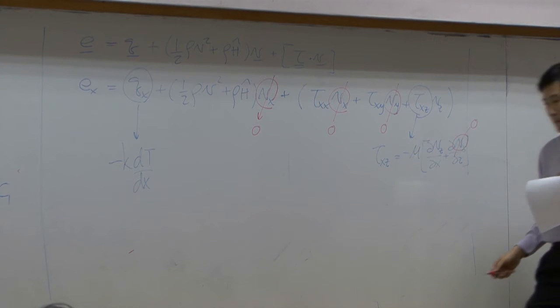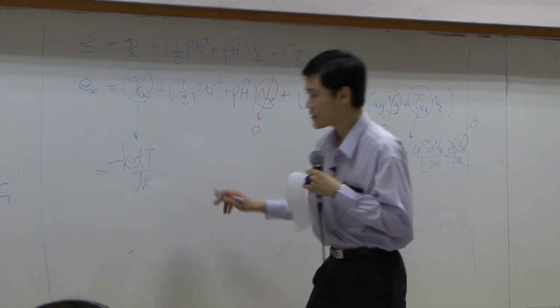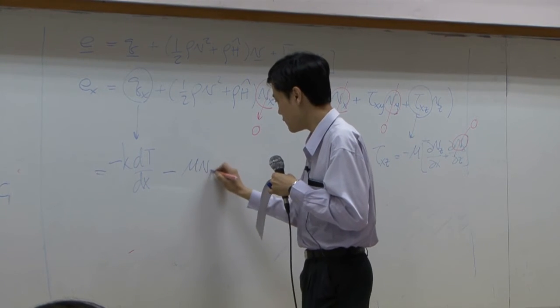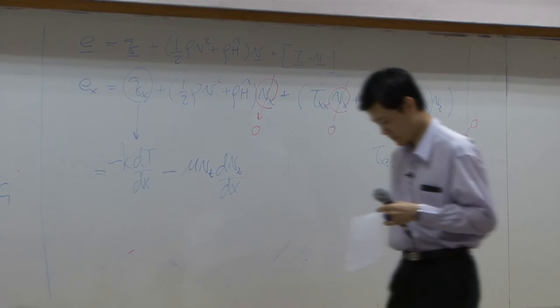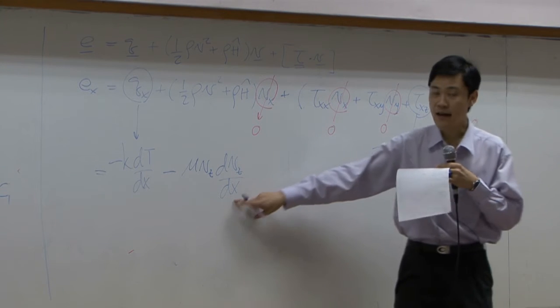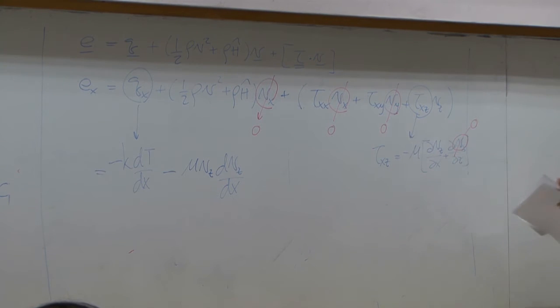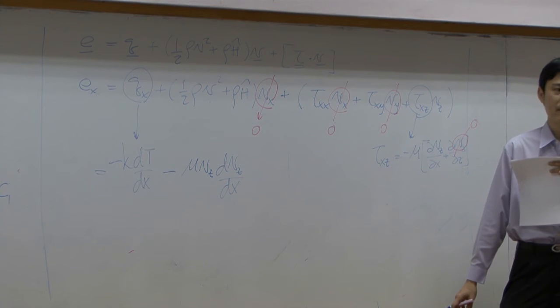So as a result, you get combined flux equal to minus k dt by dx minus mu Vz dVz by dx. Again, I can write it down as total differentiation because I know Vz is function of x only. All right? Up to this point, N equation. Can you catch up?